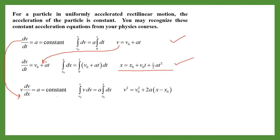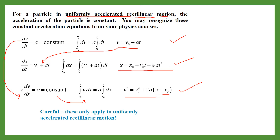Integrating once more using a straightforward integration gives v² = v₀² + 2a(x − x₀). So these are the three equations for uniformly accelerated rectilinear motion: v = v₀ + at; x = x₀ + v₀t + ½at²; and v² = v₀² + 2a(x − x₀). Be very careful — these equations only apply to uniformly accelerated rectilinear motion.